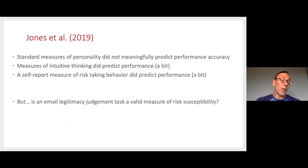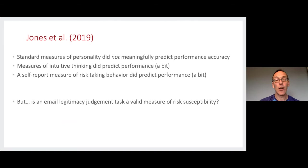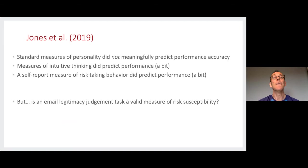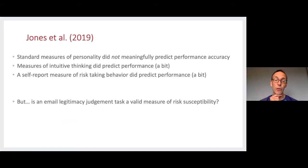What did Helen find in this 2019 work? Standard personality measures — whether people were extroverts, introverts, or high on conscientiousness — did not meaningfully predict email performance accuracy. However, measures of intuitive versus reflective thinking, such as performance on the bat-and-ball problem, did reliably and systematically predict performance to some extent. A self-report measure of risk-taking behavior also predicted performance somewhat. This began to identify which psychological factors are relevant to this task and which are not.